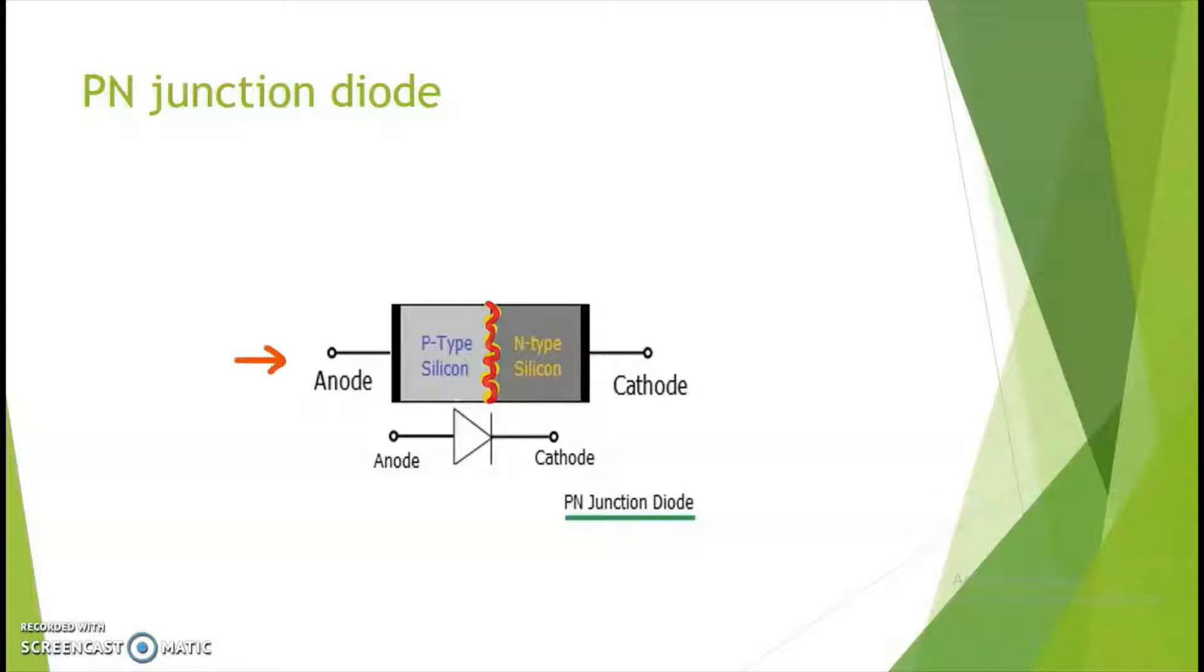This lead is called as an anode and this is called as a cathode. This is the symbol of a P-N junction diode.